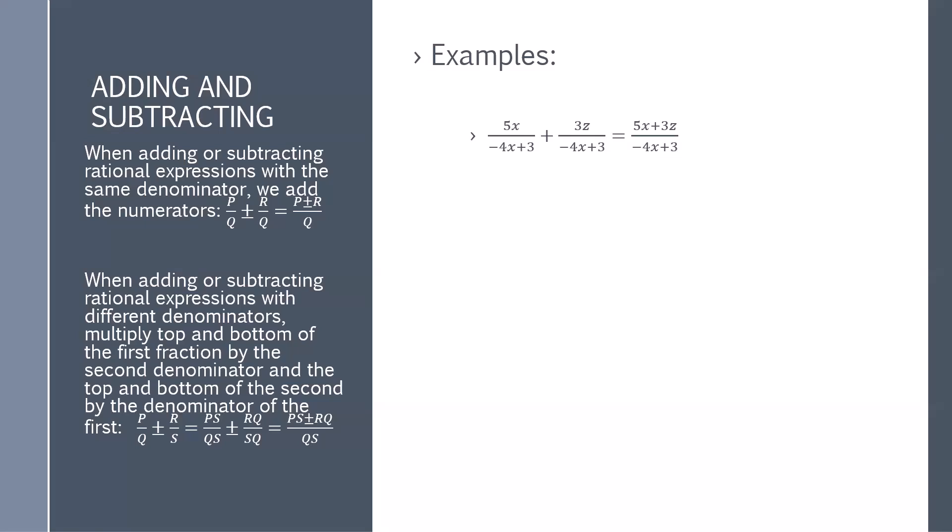For example, 5x over negative 4x plus 3 plus 3z over negative 4x plus 3. Because these have the same denominator, we simply add the numerators. So 5x plus 3z divided by that common denominator, negative 4x plus 3.